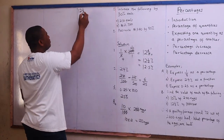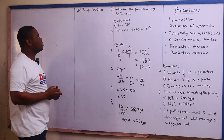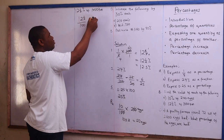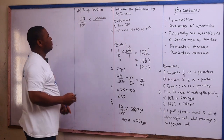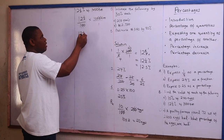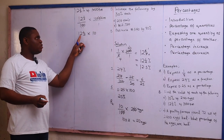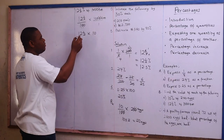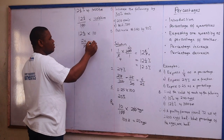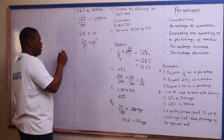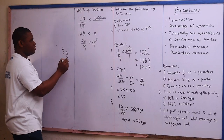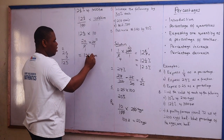Next: 12 and a half percent of 1000 kilometers. So 12 and a half percent over 100 times 1000 kilometers. The zeros cancel, leaving 12 and a half times 10. Converting the mixed number: 25 over 2 times 10 over 1 — two goes into itself once, two goes into 10 five times, giving 25 times 5, which equals 125 kilometers.